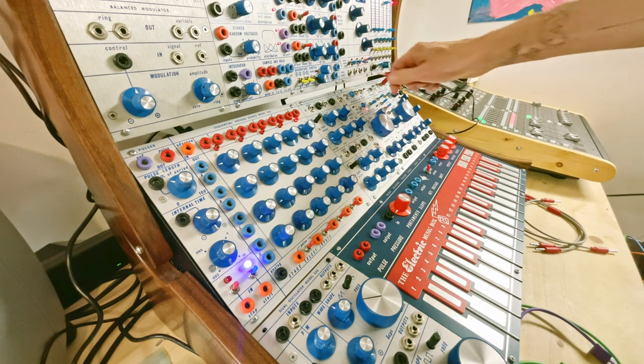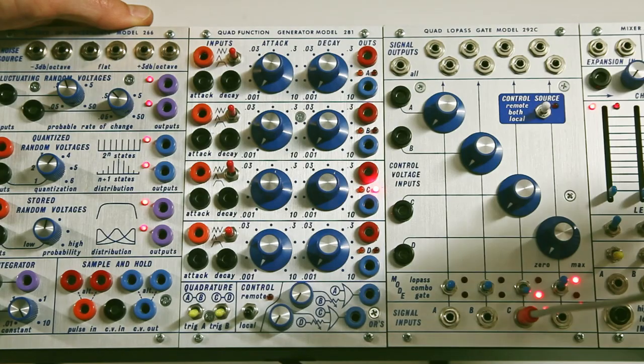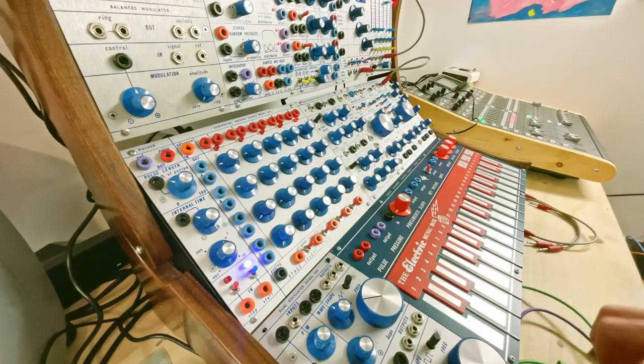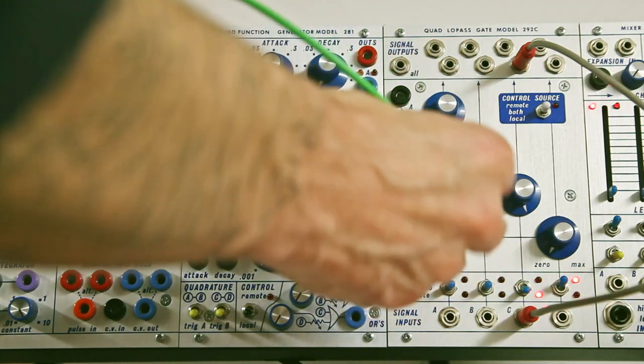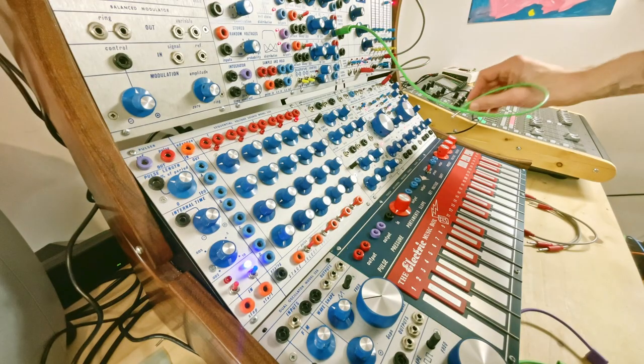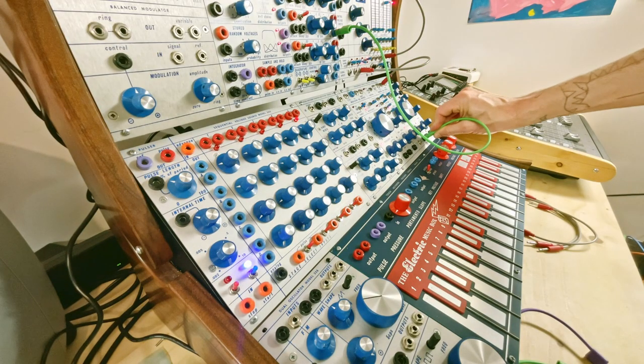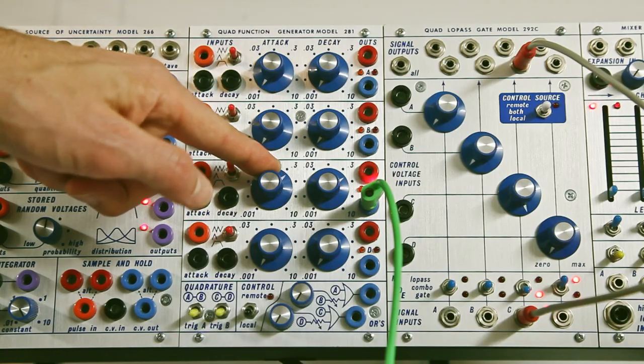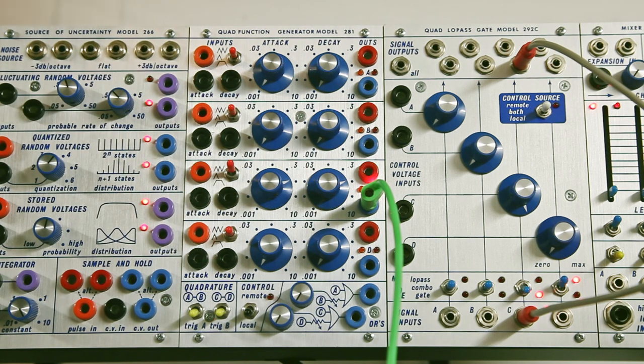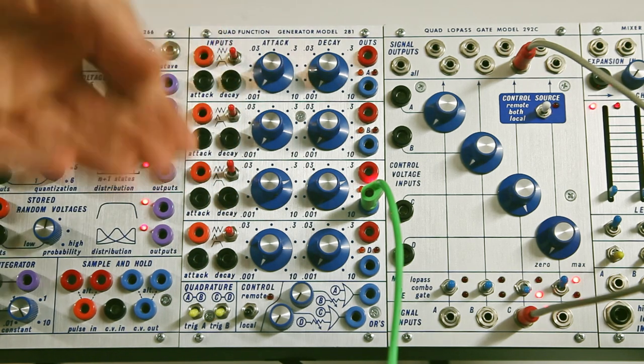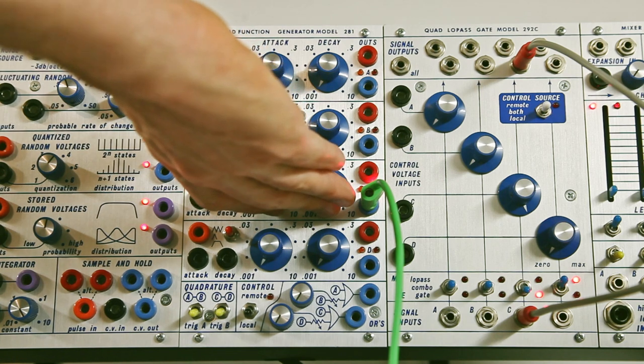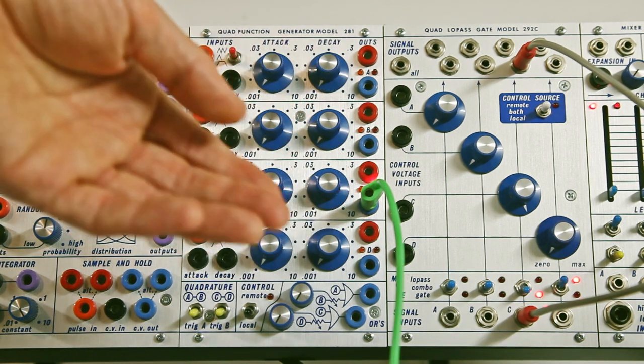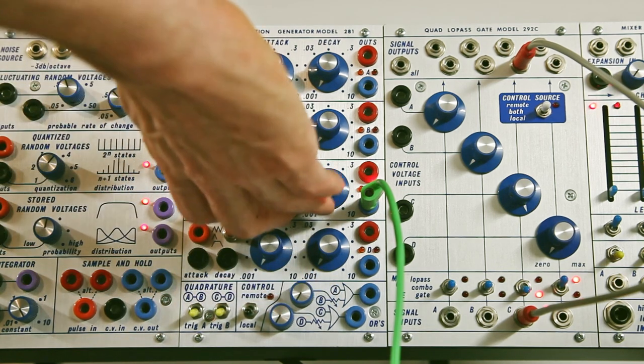Let's try with an oscillator from the 259. I will use this self cycling function to modulate, for example, the frequency of the oscillator. So as you can see, as I increase the values, of course, the function is slower. And as I reduce the values, this way, the function goes faster. And it can go up to audio rate.